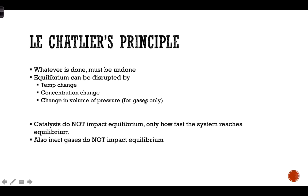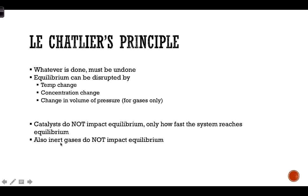Changing volume and pressure applies only to gases — changing volume impacts pressure for gases. Some things do NOT impact equilibrium: catalysts do not impact equilibrium; that's a typical trick on tests. Catalysts only impact how fast the reaction reaches equilibrium, not equilibrium itself. Adding an inert gas — like helium, argon, or any noble gas — also does not impact equilibrium because they don't react with anything.